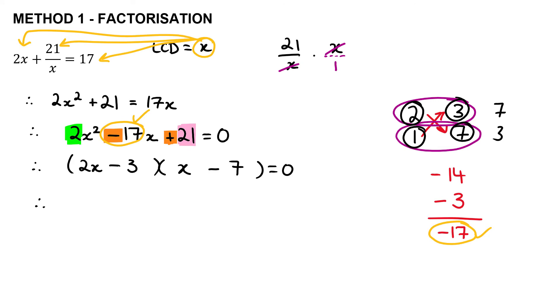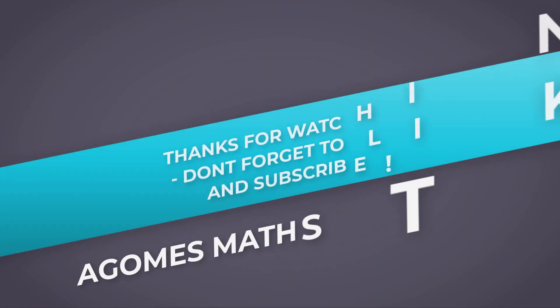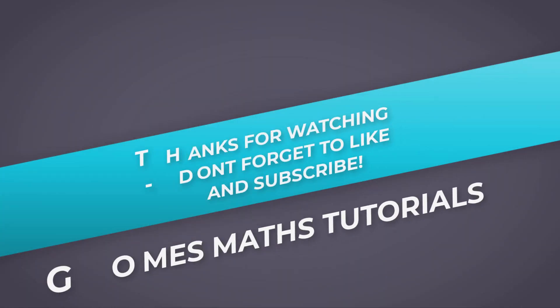Making the two factors equal to zero gives x equals 3 over 2 or x equals 7. That's your answer to this question. The next video will look at the next method for solving quadratic equations.